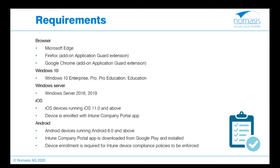For browser requirements, you can use Microsoft Edge, Firefox, or Google Chrome — the latter two require an add-on called Application Guard Extensions. For Windows 10, you need Enterprise, Pro, Pro Education, or Education editions. Windows Server 2016 is also supported. For iOS, the device should run iOS 12 or later — iOS 11 is no longer supported. For Android, devices must run version 6 or later. Both iOS and Android devices must be enrolled via the Intune Company Portal app, as this is required for device compliance policy enforcement.